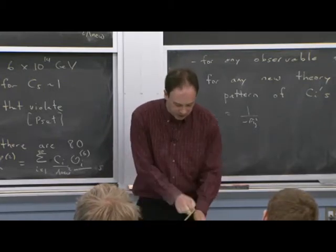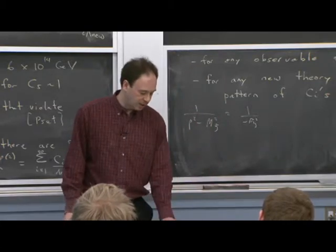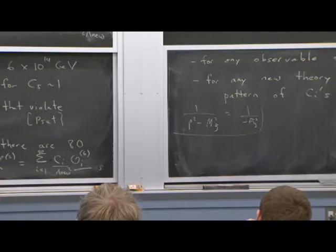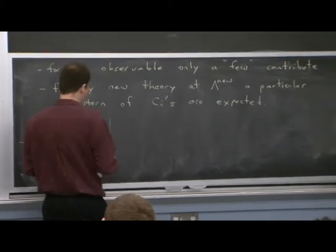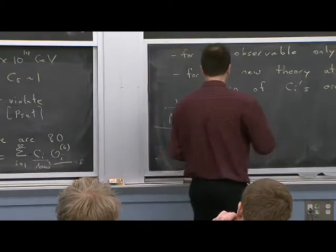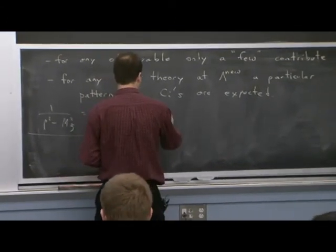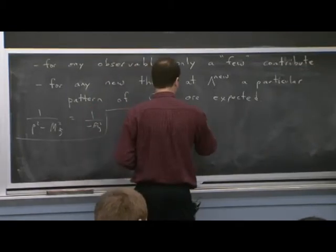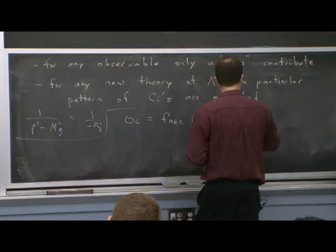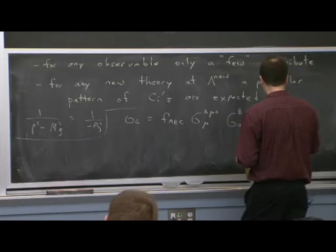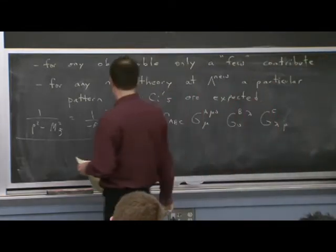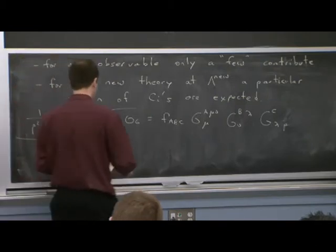I've been assuming some familiarity with the standard model. I've posted lecture notes from quantum field theory 3, and there's some review reading there. What kind of operators can we have at dimension 6? I'm not going to list all 80, but I'll list a few. We could take an operator built out of gluon field strengths — making it Lorentz invariant, contracting up the indices and color indices with f-ABC. That's an operator of dimension 6 since the G's are dimension 2, and that's one of the 80.